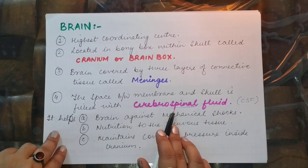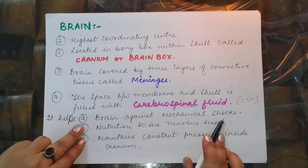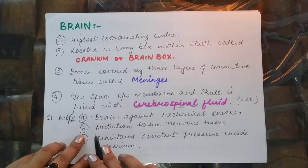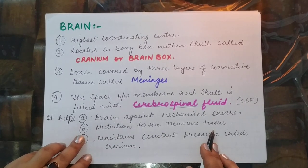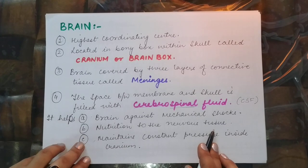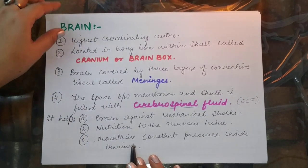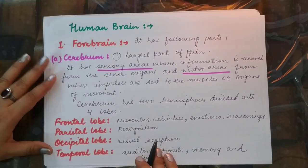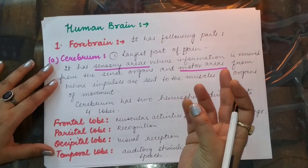The functions of cerebrospinal fluid are: first, it helps protect the brain against mechanical shocks, since the brain is a very delicate and important organ. Second, it provides nutrition to the nervous tissue, giving it the energy to perform its functions. Third, it helps in maintaining constant pressure in the cranium.